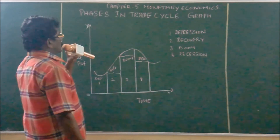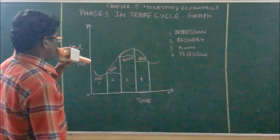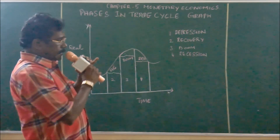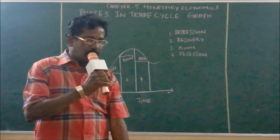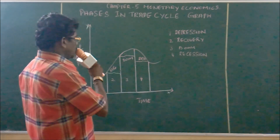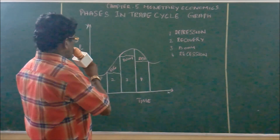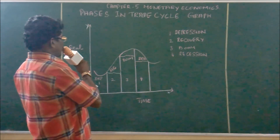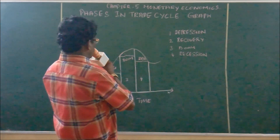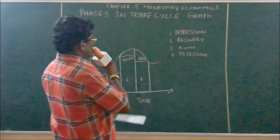In today's class we saw about the phases in trade cycle — four phases in trade cycle. Now explaining the phases in a graphical way, a graphical representation of the trade cycle. There are four stages. The trade cycle starts with the depression stage; the first stage is depression, the second stage is recovery, the third stage is boom, and the fourth stage is recession.